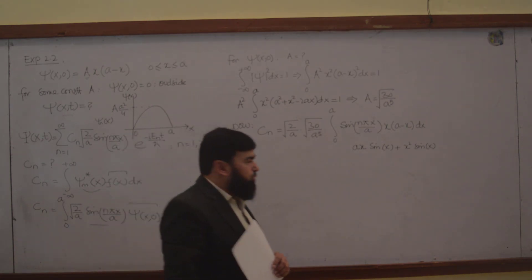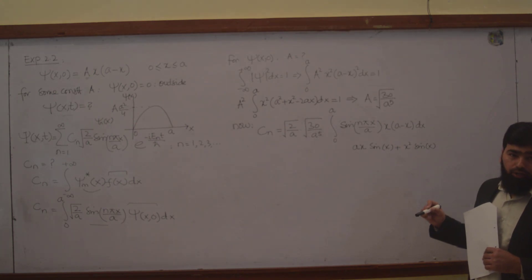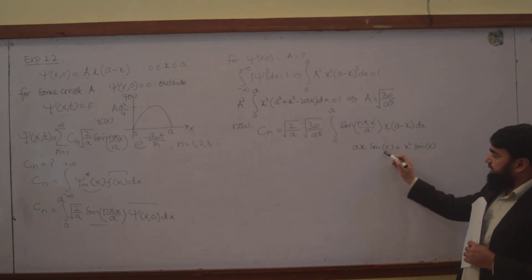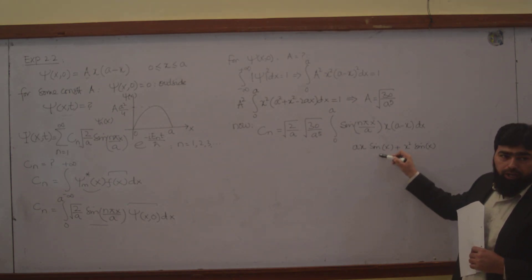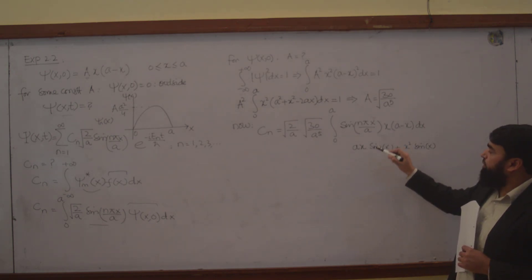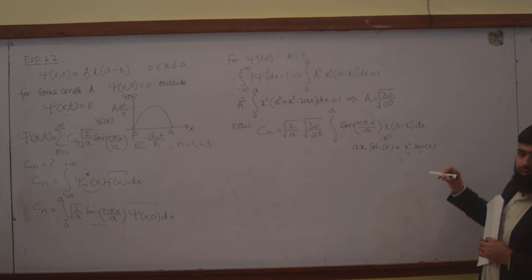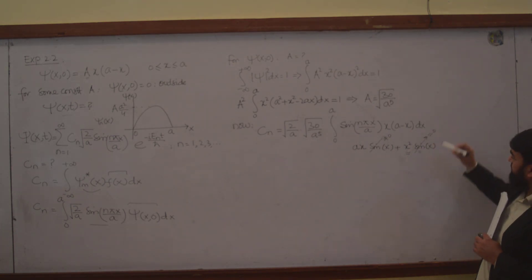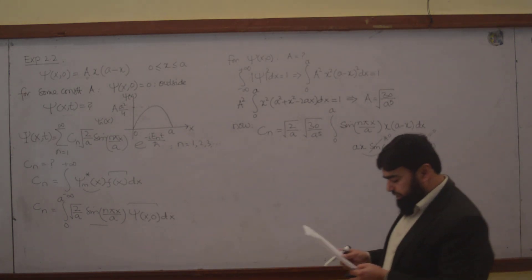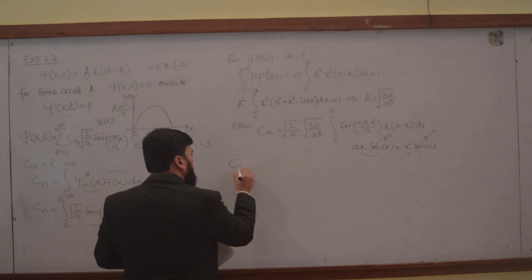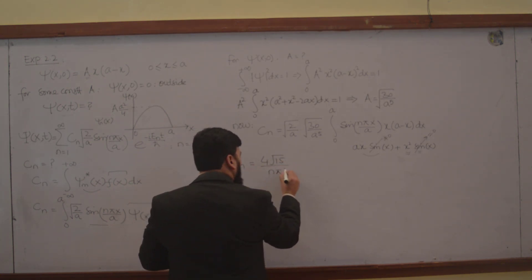The very first thing I told you: whenever you solve an integral, you have to check the odd or even nature. Here we have x and sin x — this is an odd function. x times sin x is also an odd function. Odd times odd gives an even function, so this term will be non-zero. But x squared is an even function and sin x is odd, which gives zero. So you will only keep the non-zero term when you split this integral, and the integral will come out to be Cn equal to 4√15 divided by nπ cubed.